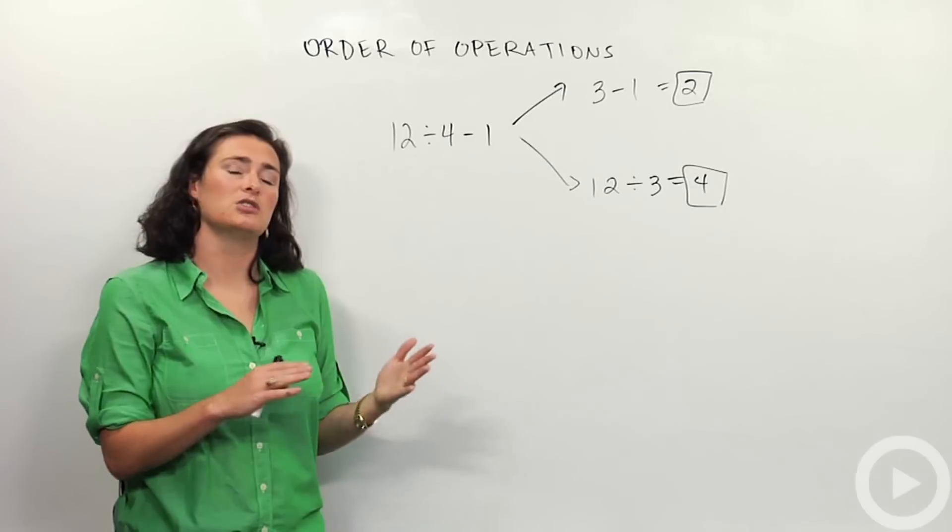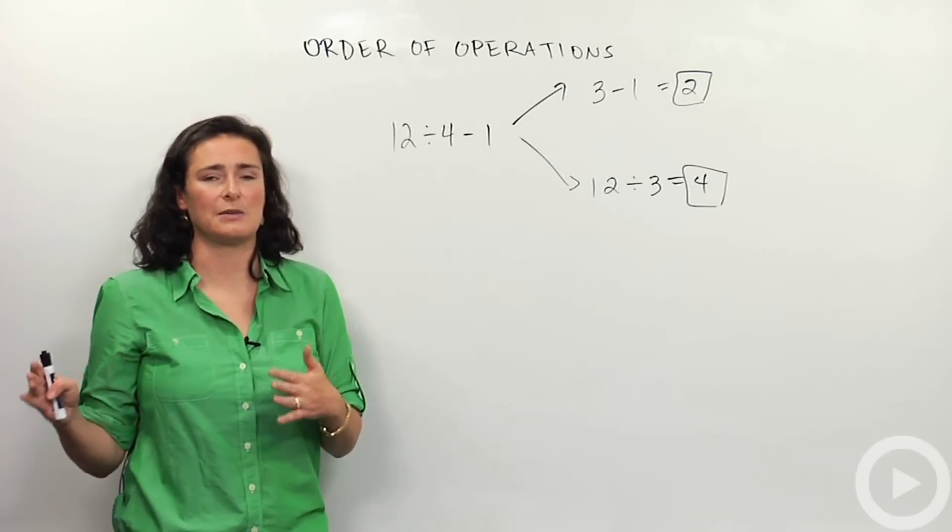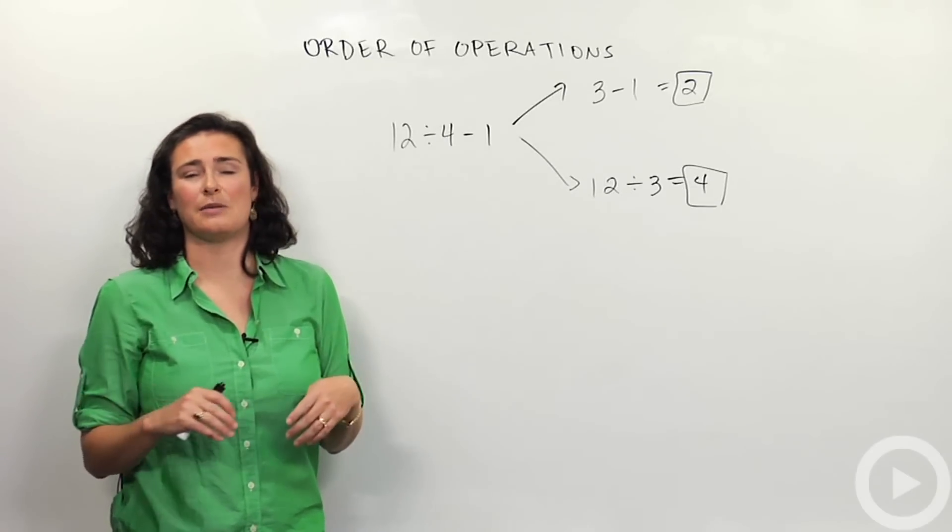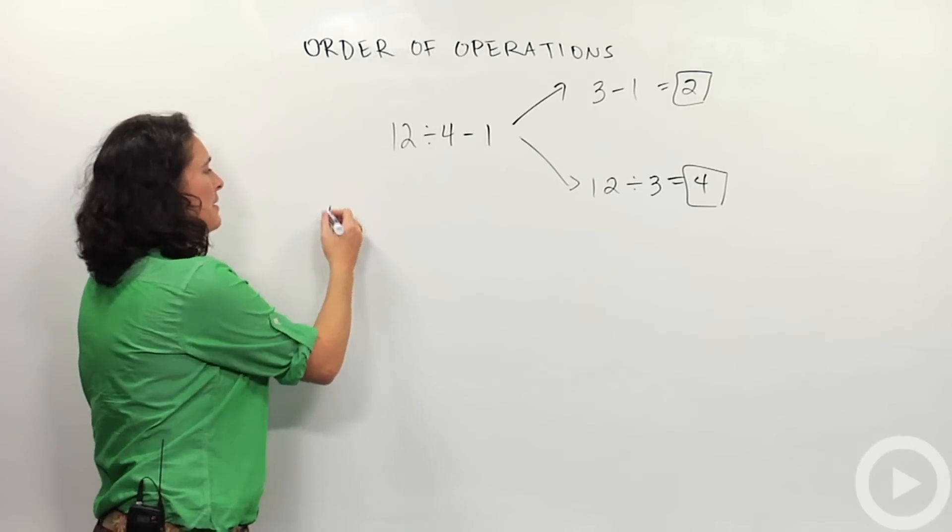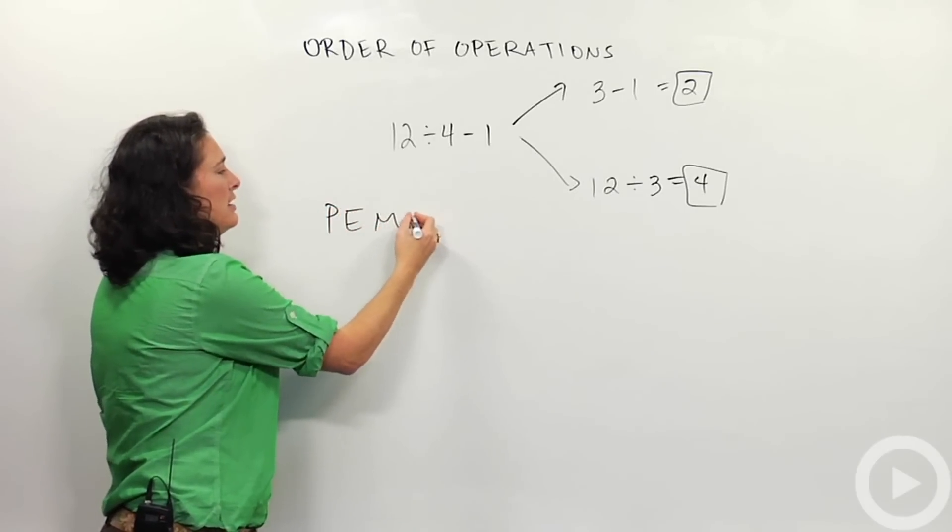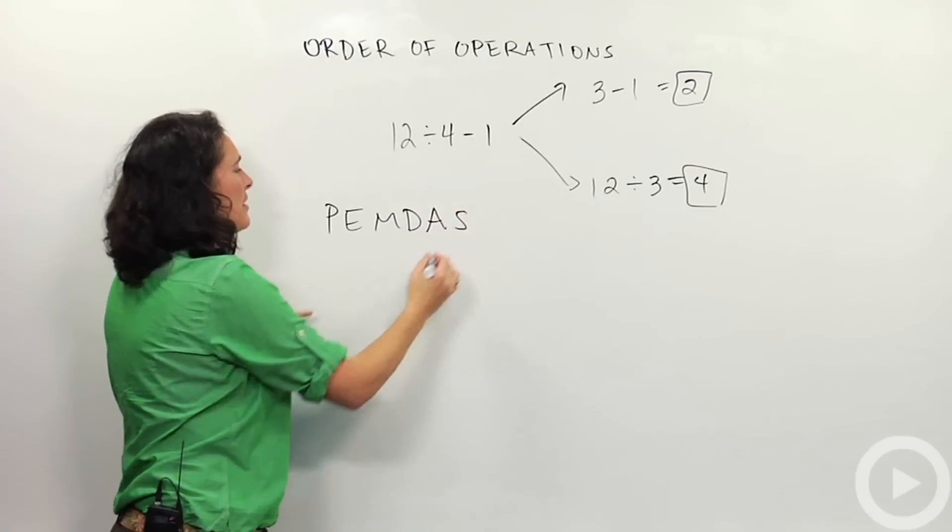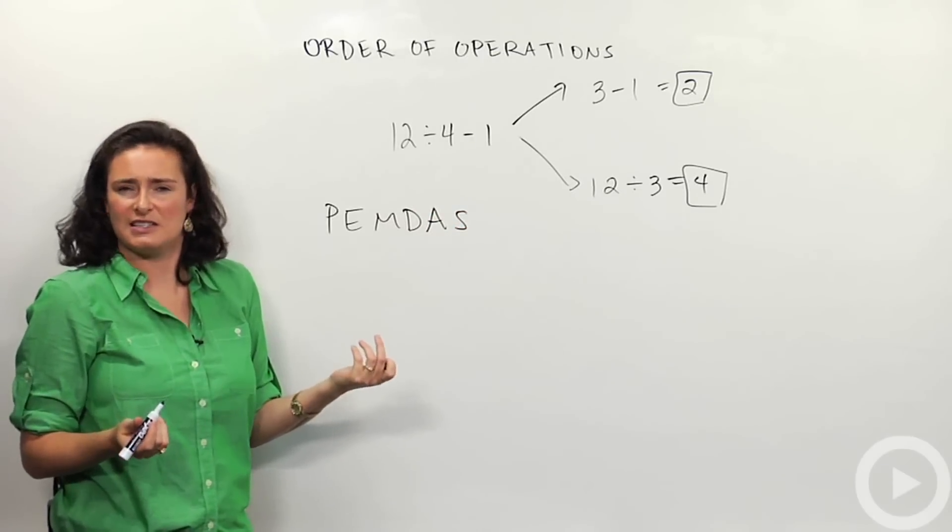We agreed on a certain order in which we're going to do the different types of operations. When we say operations, that means like adding, subtracting, multiplying, dividing. Here's what the order of operations looks like. Many people have a little acronym or a way of remembering these letters, PEMDAS. What is that?